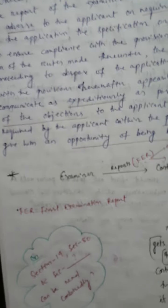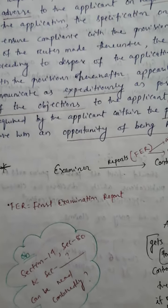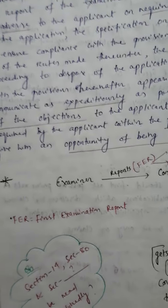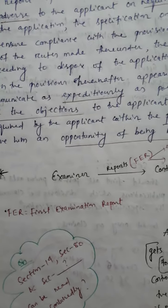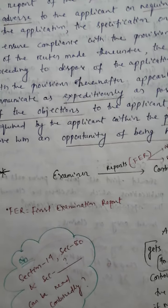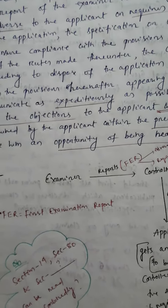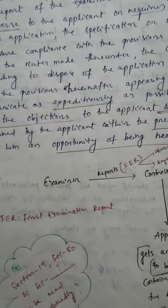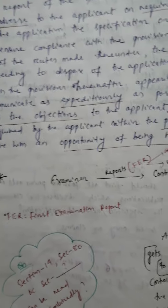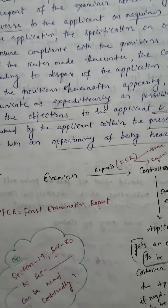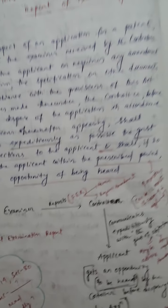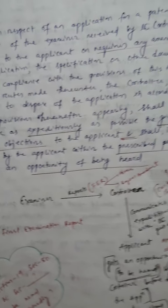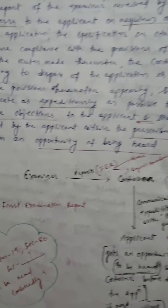Now I have a question for you: Section 14, Section 80, and Section blank can be read combinedly. That means, along with Section 14 and 80, which other section can be read combinedly, because they have some correlations or they are linked in some ways? Try to answer this.